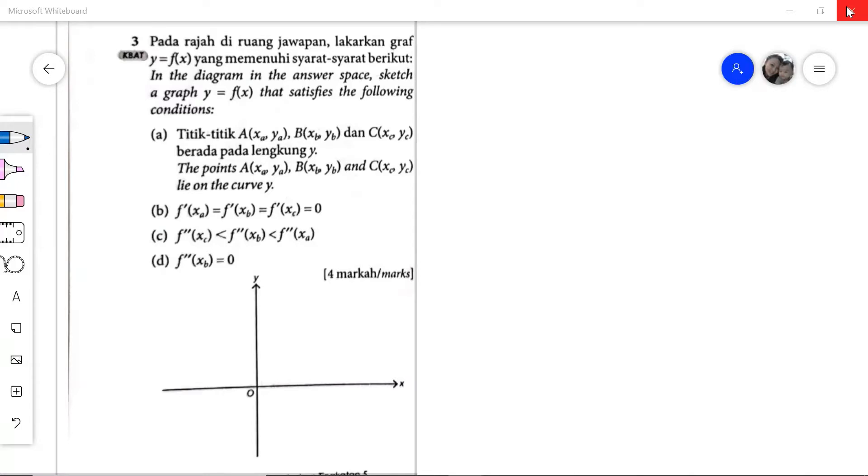Hi everyone, this is practice summative of chapter 2, paper 1, question number 3. So in the diagram in answer space, we are supposed to sketch a graph y equals to fx that satisfy the following condition.